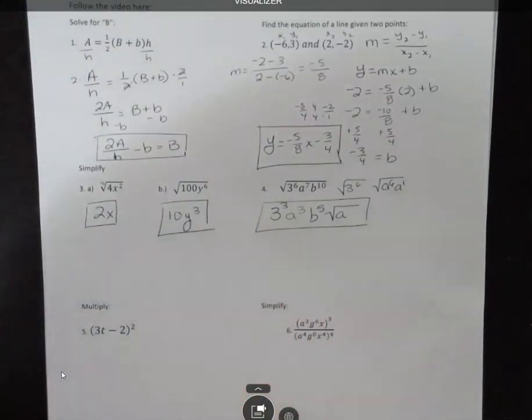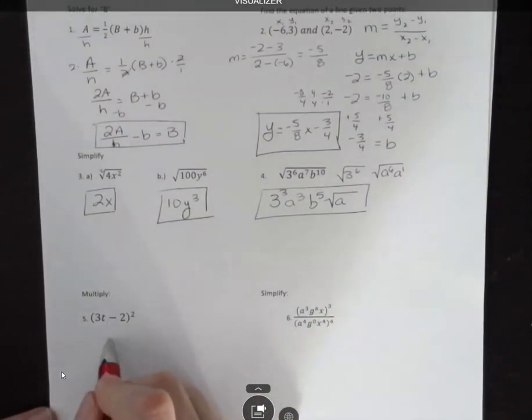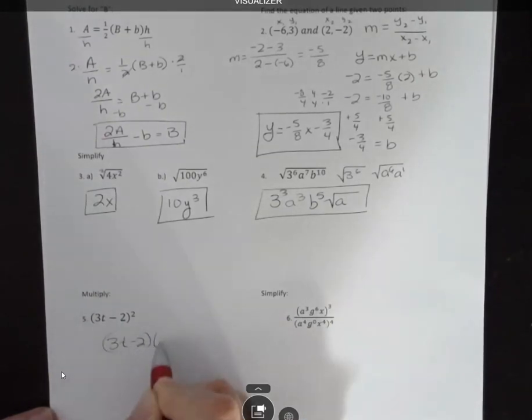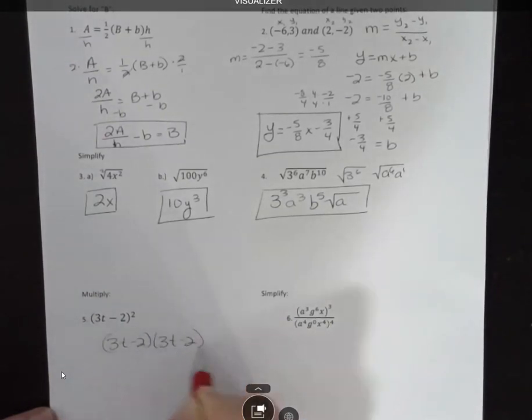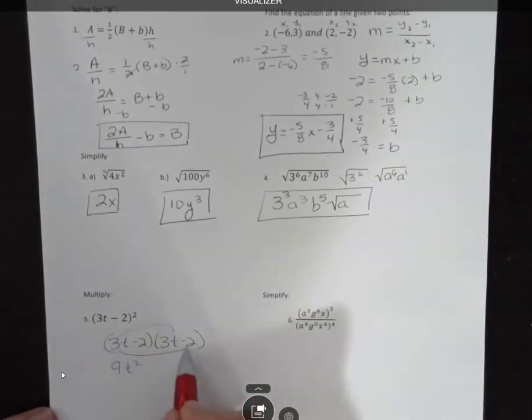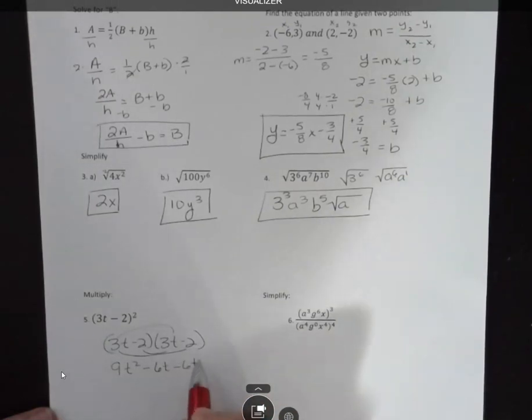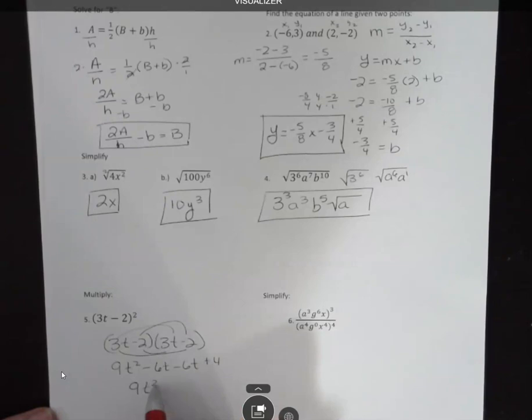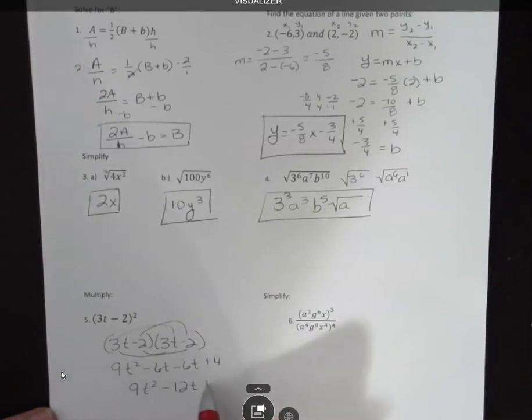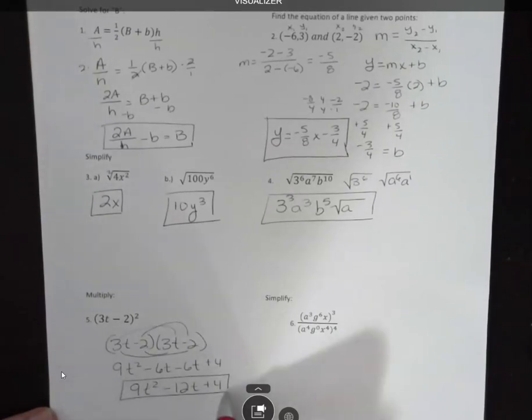Down here we're asked to multiply. You can use the shortcut for multiplication. That's fine. You can also FOIL it by writing it out side by side and distributing. 3t times 3t is 9t squared. Then 3t times minus 2 is negative 6t. Negative 2 times 3t is negative 6t again. And negative 2 times negative 2 is positive 4. Then you're going to add those terms in the middle: 9t squared minus 12t plus 4.